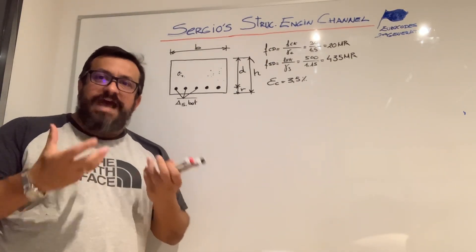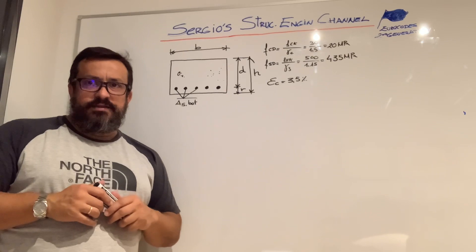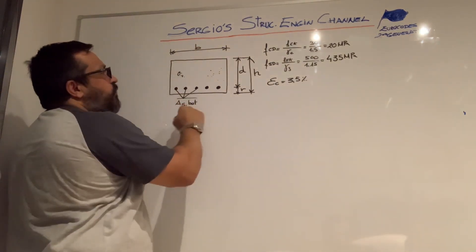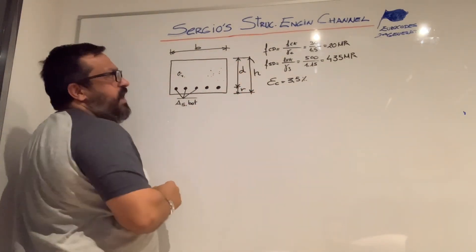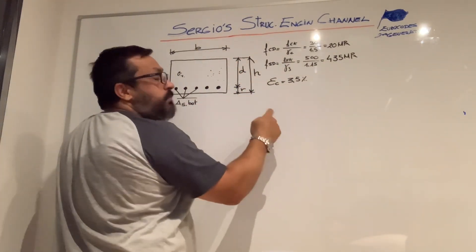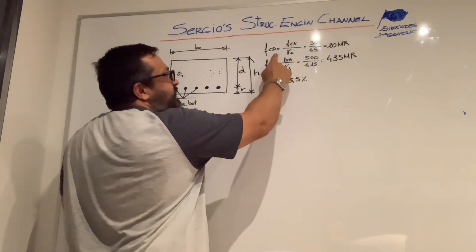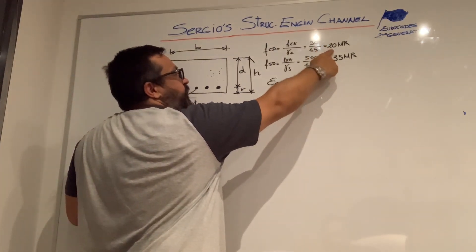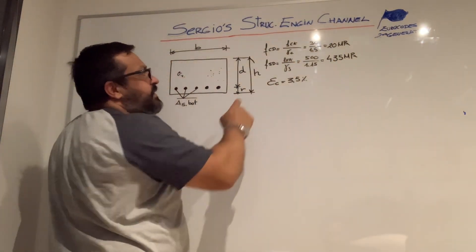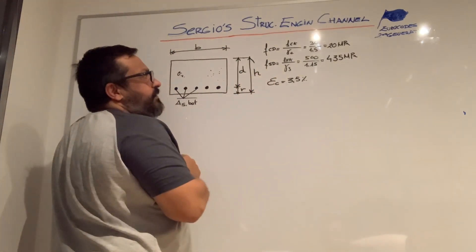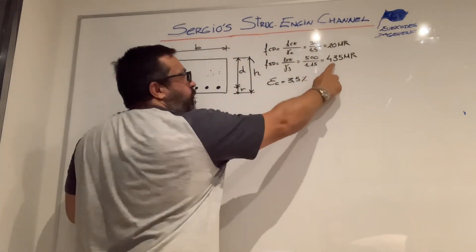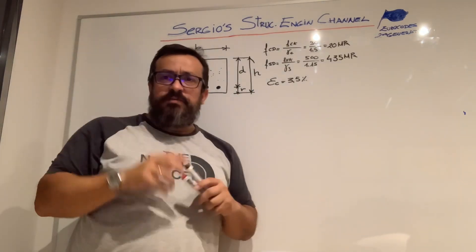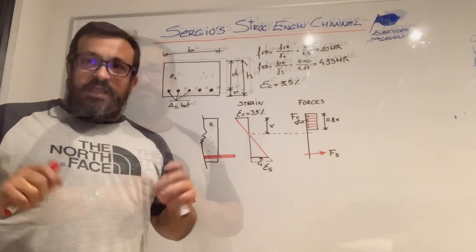From a theoretical point of view, we are going to deduce the maximum bending design capacity for the rectangular section, assuming the variables b for the width, h for the height, and d for the effective depth. According to European code, we are going to assume the materials: compression capacity for the concrete is 20 MPa, the steel reinforcement strength is 435 MPa, and the maximum strain for the concrete at the top fiber is 0.35%.